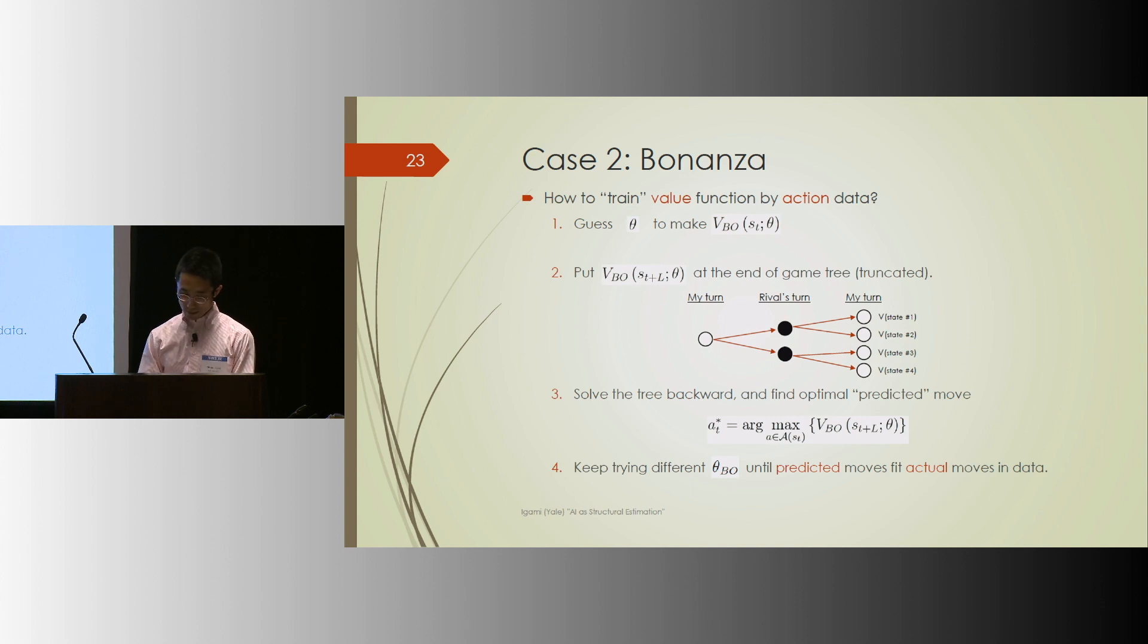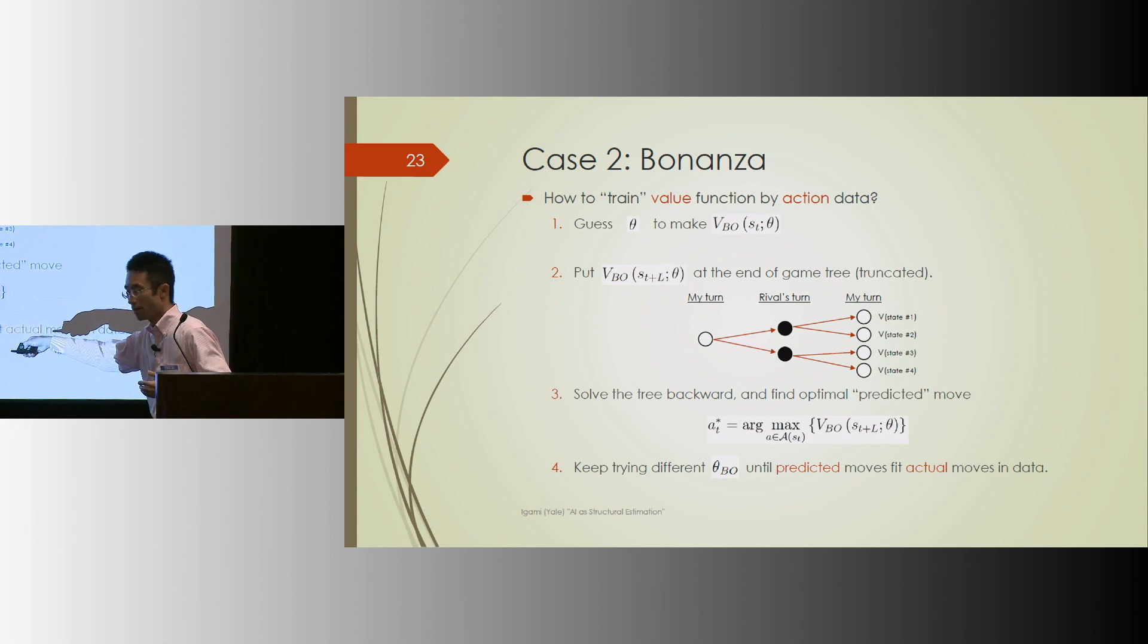The way he estimated this evaluation function is pretty interesting. For a given vector of parameter values, you can attach the corresponding terminal value functions at the end of the truncated game tree. You can move backwards to solve this truncated game tree to come up with the optimal predicted move, a t star, say. Now, you can repeat the whole procedure until you find the parameter values that would best rationalize the actual moves taken by the human professionals.